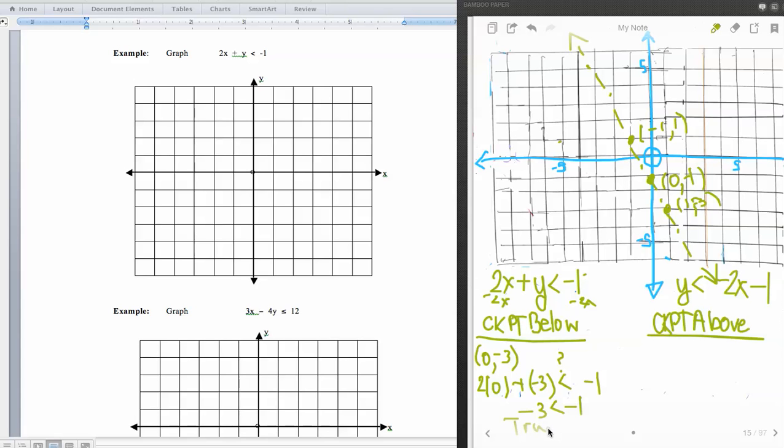Now, I'm not just going to jump to the conclusion that that's where I'm going to shade. I'm going to go and do my other checkpoint as well, because if I happen to come out with two trues, I know that I did something incorrect.